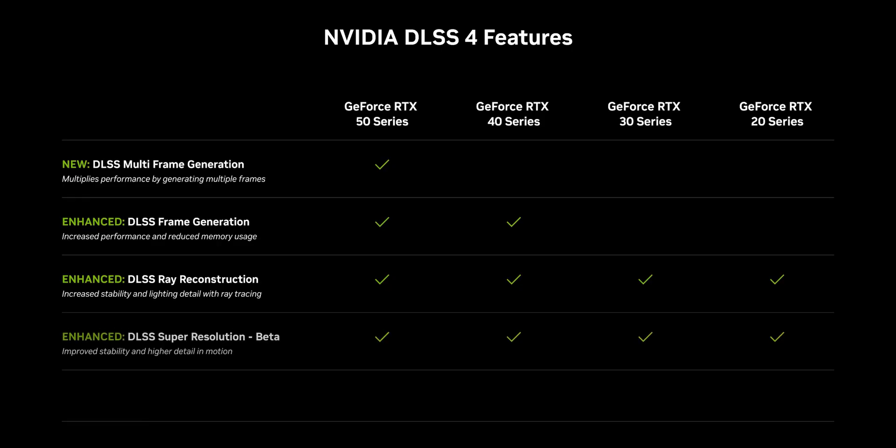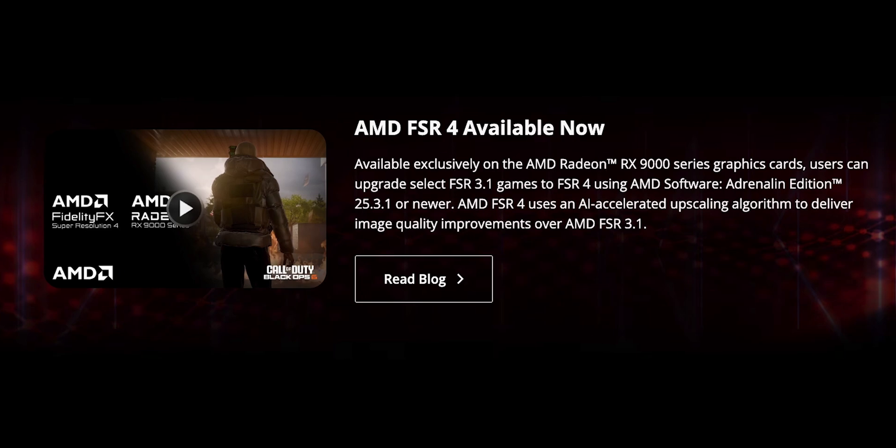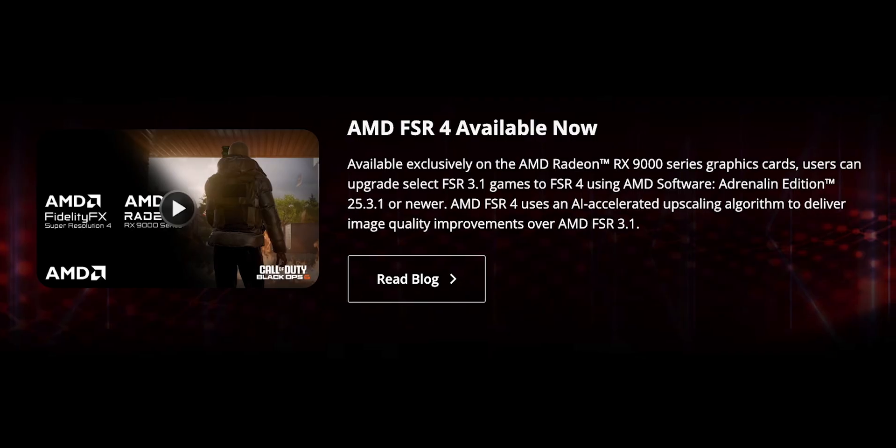Everyone's talking about it. DLSS 4 works on RTX 2000 series, but FSR 4 doesn't work on RX 7000. What the hell, AMD? I get it, it feels unfair, but if you're expecting this to be some lazy anti-consumer move from AMD, you're wrong, because what's actually going on here is way deeper.